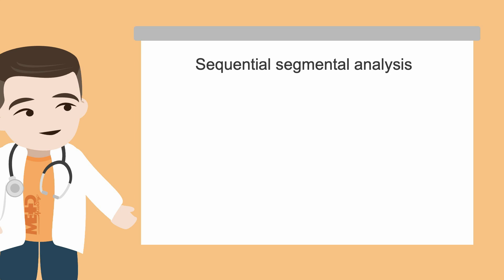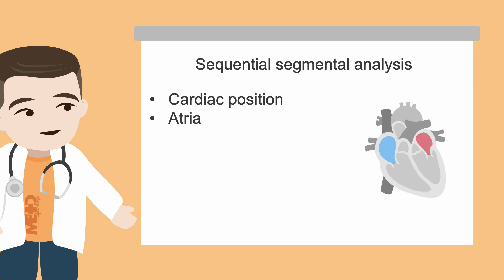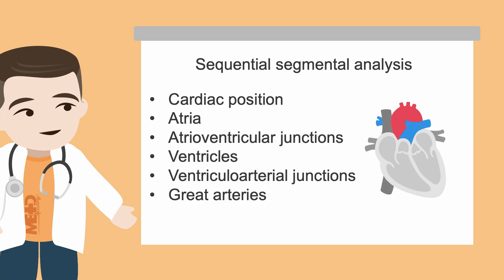By using sequential segmental analysis, it ensures you follow a logical sequence in describing, firstly, the cardiac position, followed by the atria, the atrioventricular junctions, the ventricles, the ventriculoarterial junctions, and the great arteries. The final step is to describe any associated cardiac anomalies.